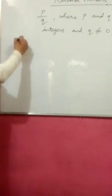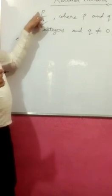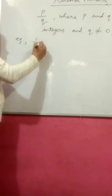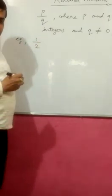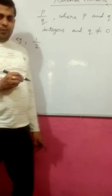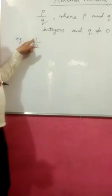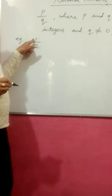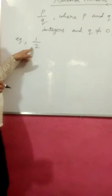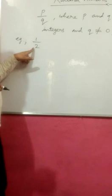For example, any number which can be written in the form of P by Q. It means, suppose if I write 1 by 2, this is a rational number. Why? Because the numerator P is 1 and you all know that 1 is an integer, a positive integer.